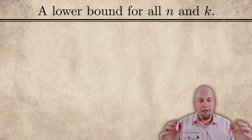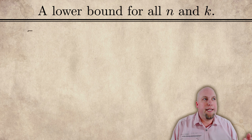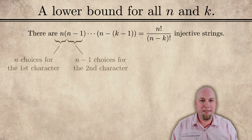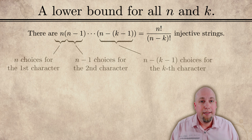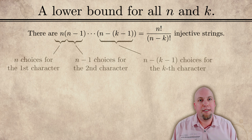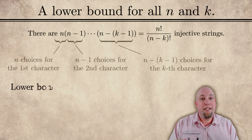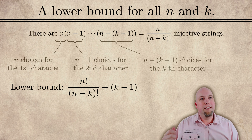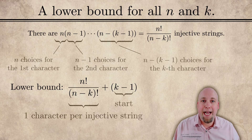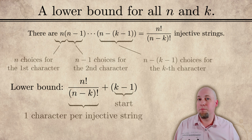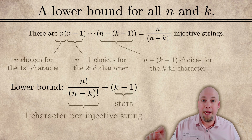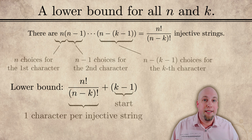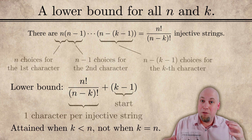If we generalize this to other parameters — other numbers of symbols n and other lengths of substrings k — here's how the counting goes. It turns out there are n factorial divided by (n minus k) factorial different substrings that we want to put in this superstring, each of length k. So we cannot possibly construct an injective superstring shorter than n!/(n−k)! + k − 1 characters long. That's a lower bound on the length of a minimal injective superstring.